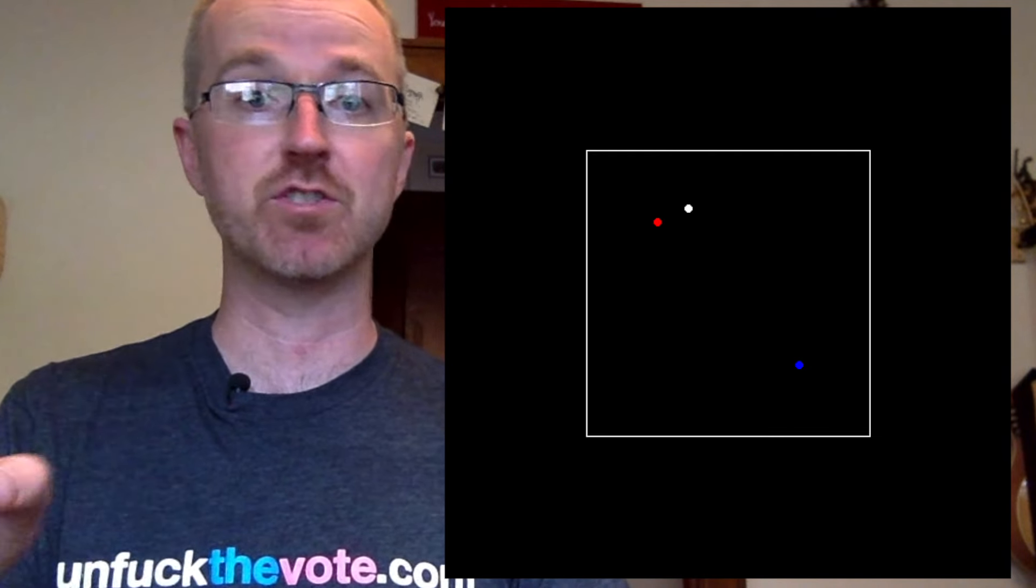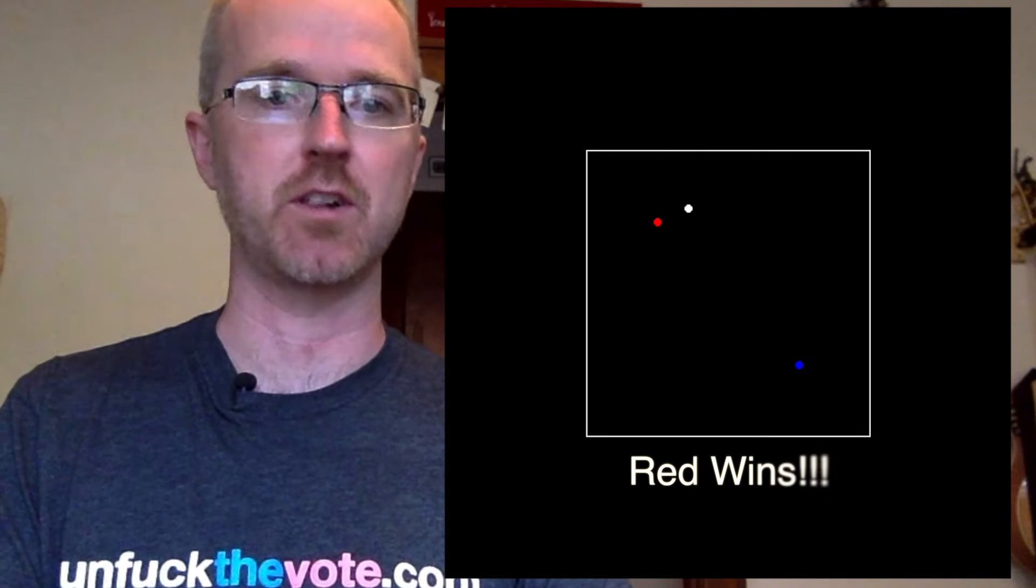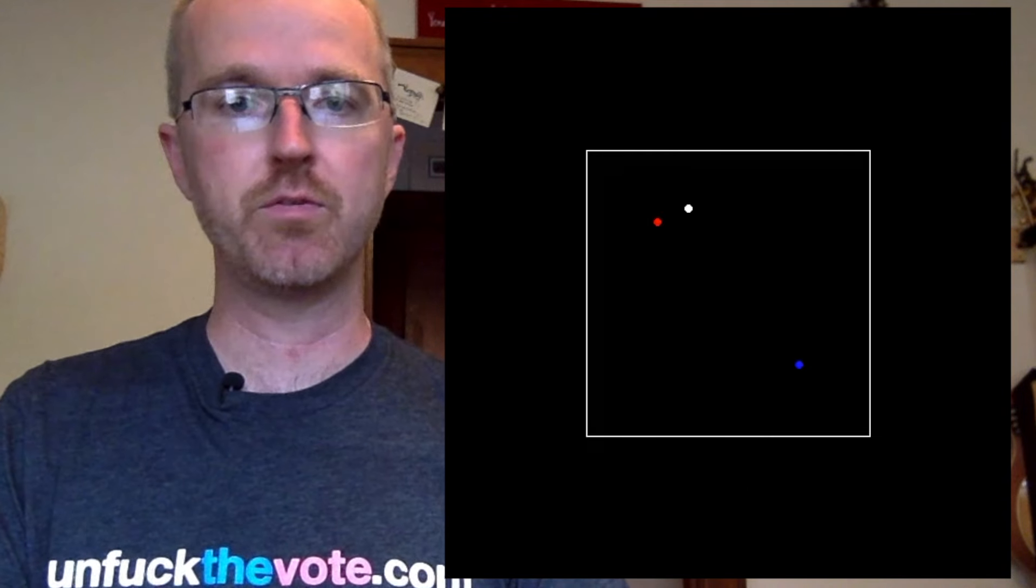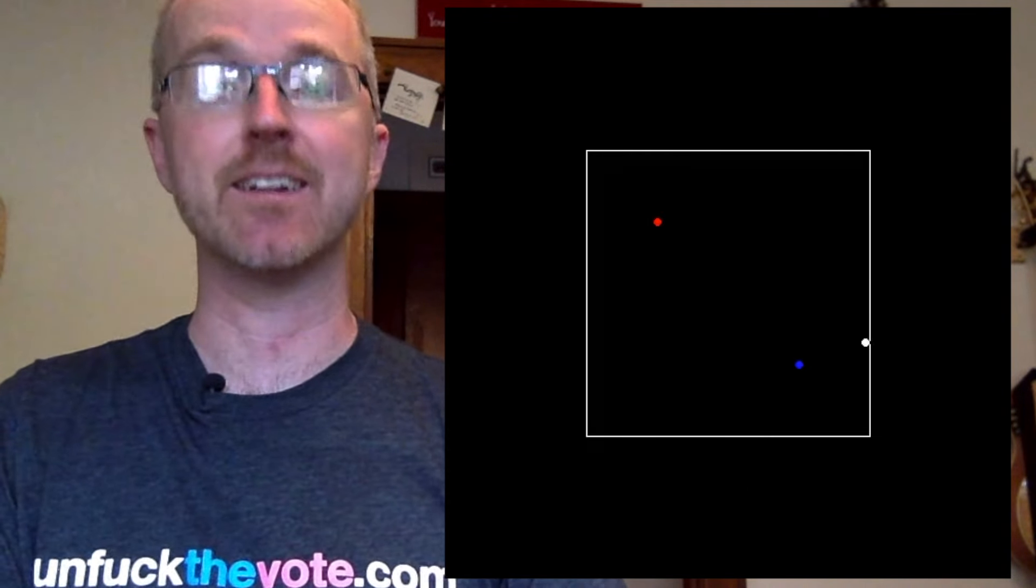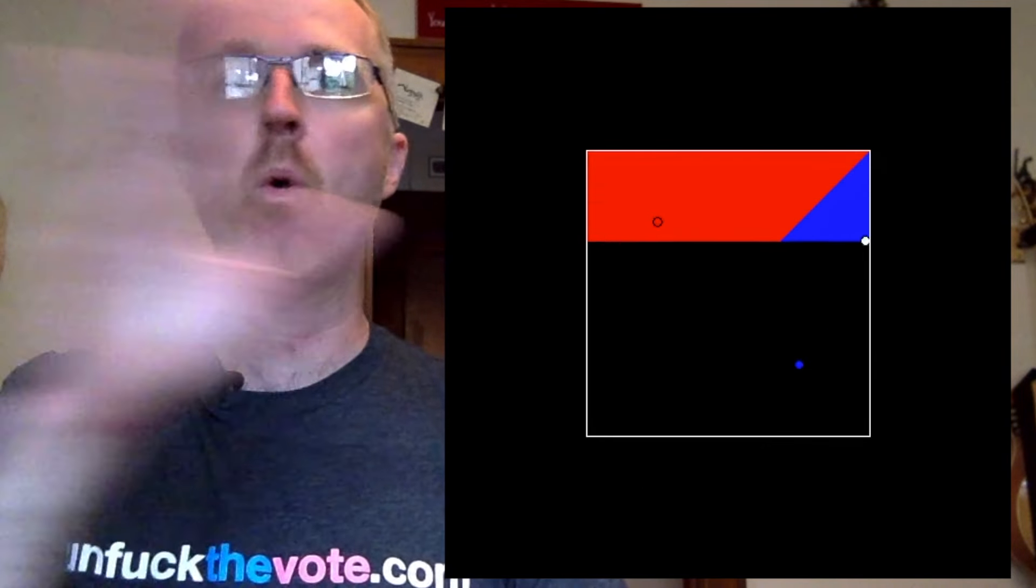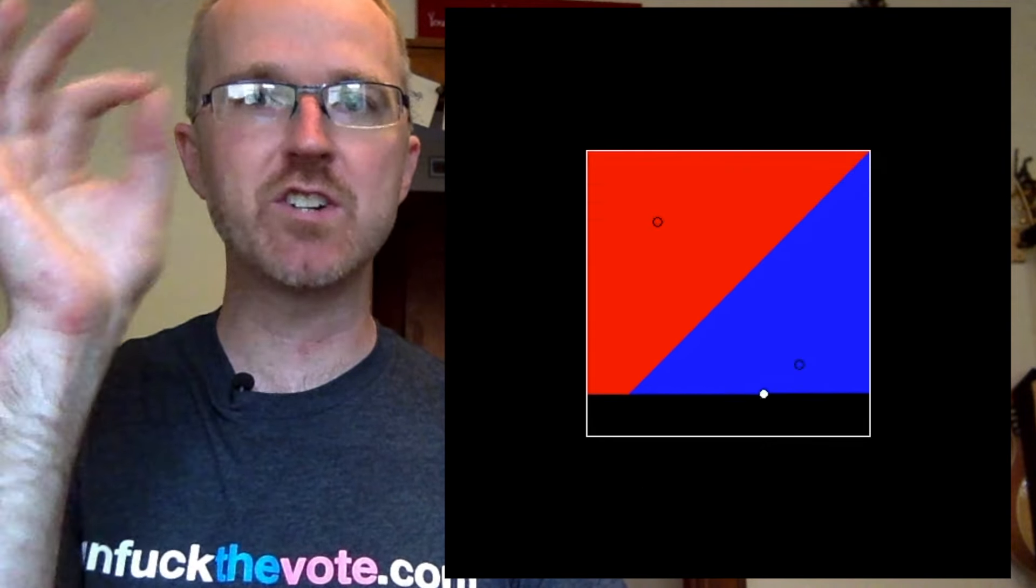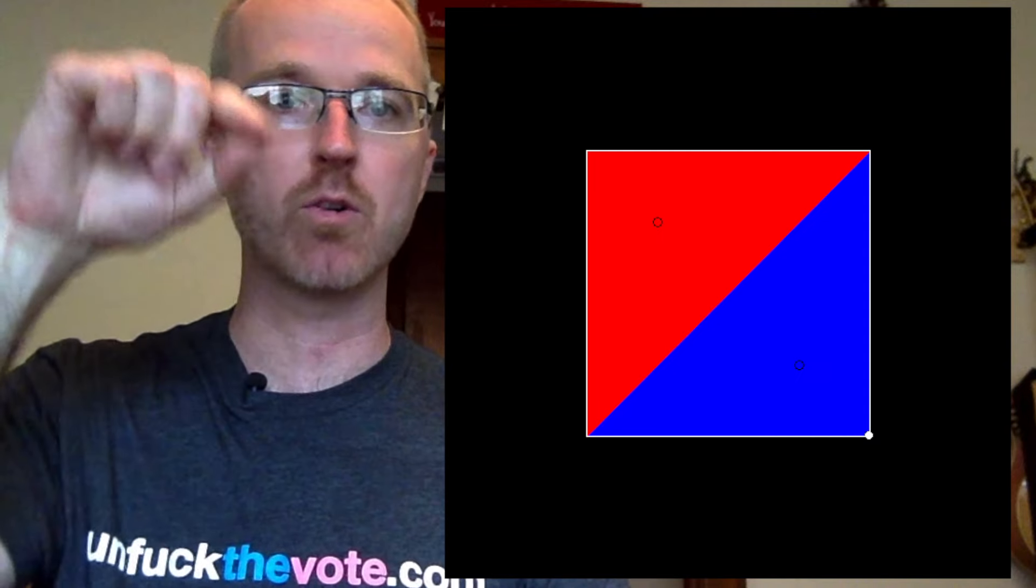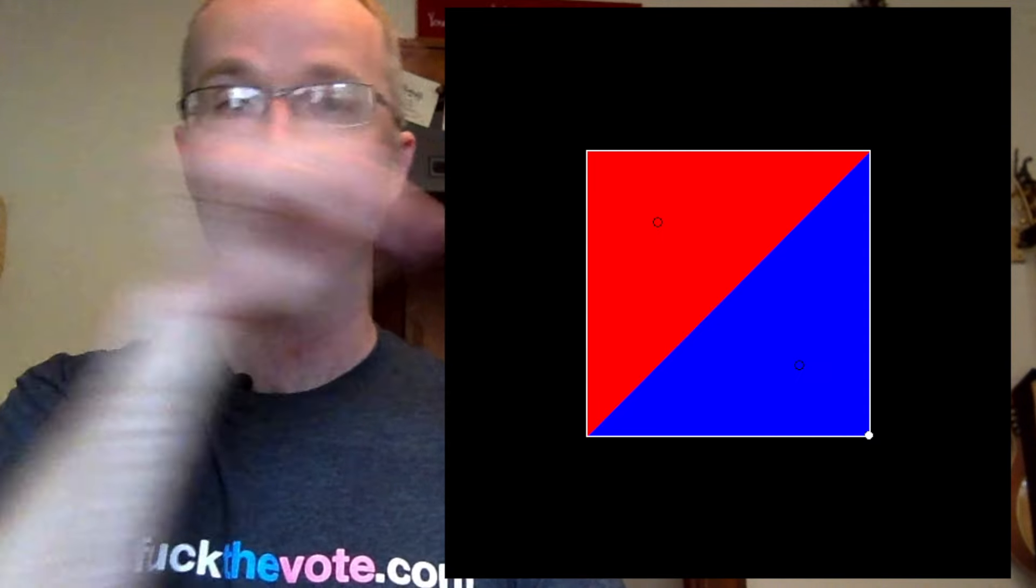And in this simulation, the voter just picks whichever candidate is closest. As the voter moves politically closer to the other candidate, that candidate becomes the winner. Now we're going to paint the whole background with whichever candidate would win when the voter is at each point in the political spectrum.